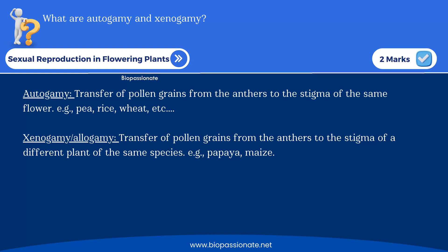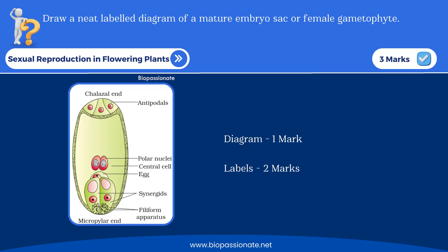Here is a two-mark question: what are autogamy and xenogamy? Look at the definition along with examples. In sexual reproduction in flowering plants, they are going to ask many diagrams for three to five marks. You have to practice them. One diagram they will ask for three marks is the embryo sac — draw a neat labelled diagram of the mature embryo sac or female gametophyte.